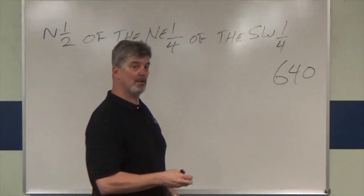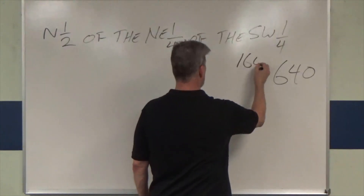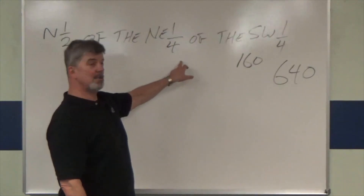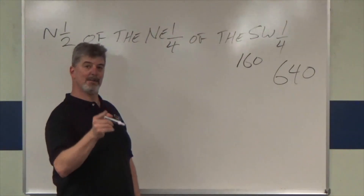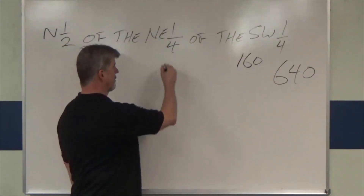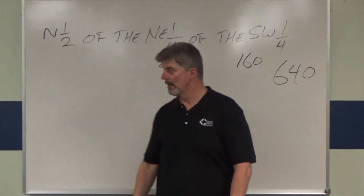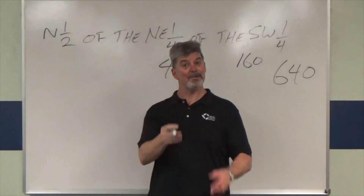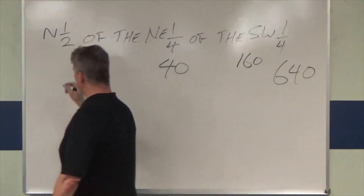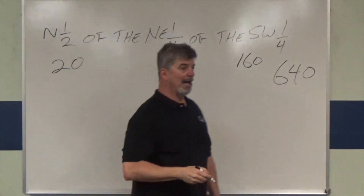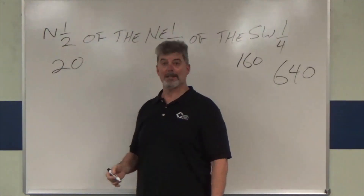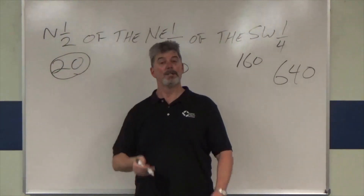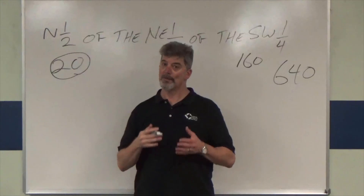Write it down so you don't lose your place. 160 divided by 4 is 40 — write it down. 40 divided by 2 is 20 — write it down. We've come to the end of the line, so that's the answer. Please try not to overthink this one.